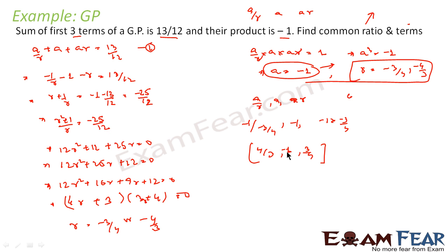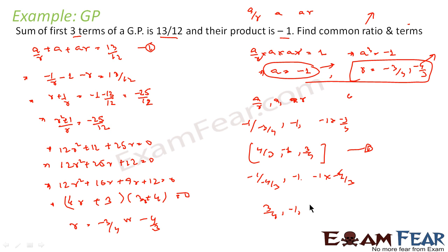In the second set, assuming r = minus 4/3, the terms are: minus 1 ÷ (minus 4/3) = 3/4, minus 1, and minus 1 × (minus 4/3) = 4/3. So we have two sets of terms. The common ratio is minus 3/4 or minus 4/3. That is the answer.